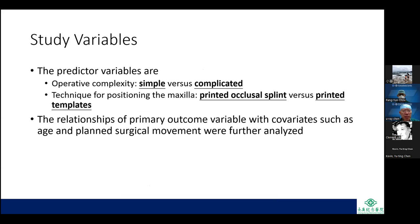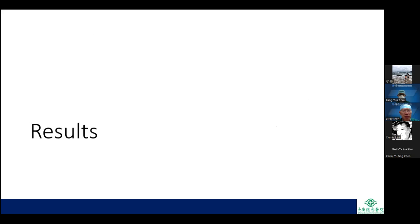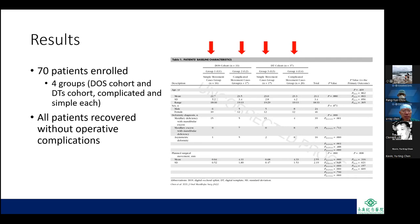The predictor variables were operative complexity (simple vs. complicated cases) and the technique for maxillary positioning (DOS vs. DTS). Relationships of the primary outcome with covariates such as age and planned surgical movement were further analyzed using non-parametric statistical methods. A total of 70 patients were enrolled, separated into four groups. All patients recovered without operative complications.